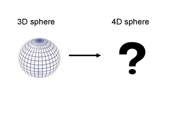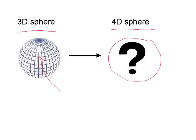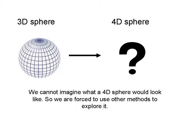So we'll take a 3D sphere — we're talking about the volume, the inner space of the sphere — and we curve it around to create a 4D sphere. What do we get? Well, it might be a cheap way out, but we can't imagine what a 4D sphere would look like. It's beyond our ability, so we're forced to use other methods to explore it.